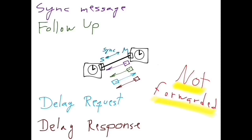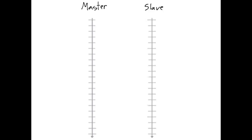Let's now look at the full details of how the clocks are synced. In this figure, we have two timelines, one corresponding to the master port and the other corresponding to the slave port. Let's assume that the two clocks are initially unsynchronized, such that the one from the master indicates 200 seconds after midnight, while the one from the slave indicates 180 seconds after midnight. So what we have is a clock offset of 20 seconds between the master and the slave. A naive approach to synchronizing the clocks would be to have the master port simply tell the slave port the current time in a single message. The slave would receive that message, know that the value of the clock of the master is 200 seconds, and simply update its local clock.